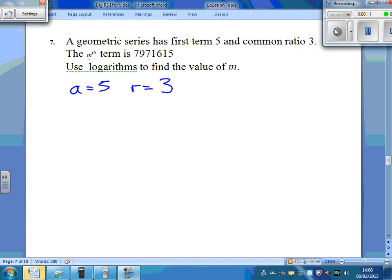The nth term is a times r to the n minus 1, m minus 1, because you've got an m here. So we've got 5 times 3 to the power of m minus 1, and that equals that big number there.